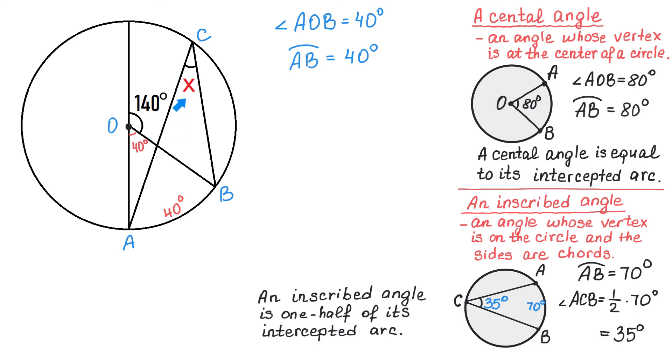This angle also intercepts this arc that measures 40 degrees. Now according to this rule, this angle will be half of the intercepted arc. So, we will write that angle X is one half of the intercepted arc of 40 degrees. Then angle X measures 20 degrees.